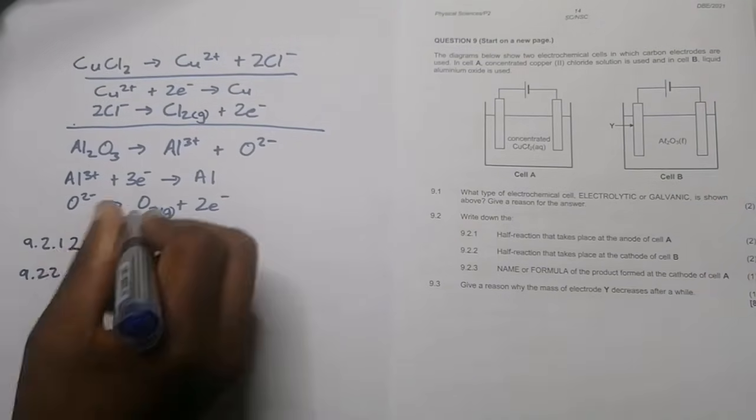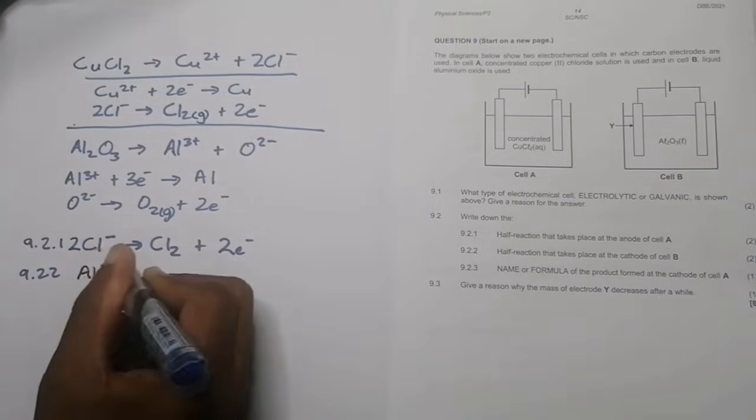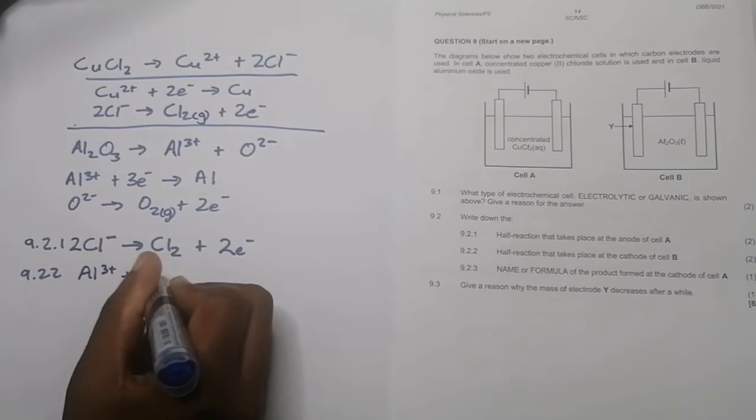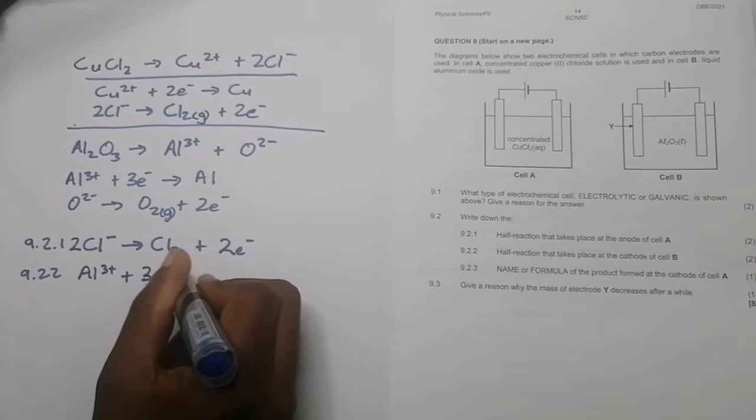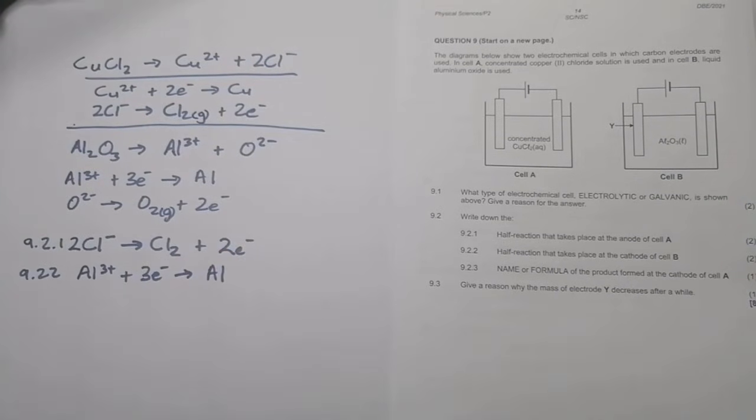So for cell B, reduction in this case would mean that Al³⁺ would now receive electrons, gain of electrons, and simply become aluminum the metal. And please note with single arrows, no additional arrows should be written there.